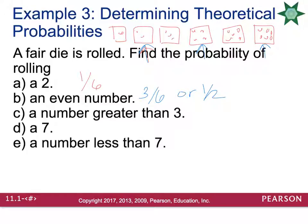What is the probability of rolling a number greater than three? Well, you could roll a four, a five, or a six. So again, that would be three out of six, or one out of two.